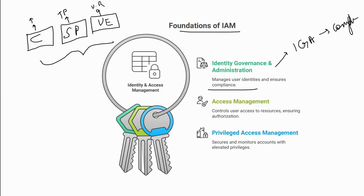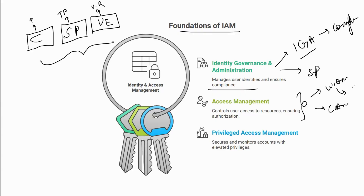Let's tag how these reasons relate to the different domains. IGA manages user identities, ensures compliance, and also contributes to security posture improvement. For Access Management, you have workforce IAM and customer IAM — workforce primarily deals with security posture, and customer IAM deals with user experience and security posture. Organizations typically don't buy an access management tool just to solve a compliance problem; that's where IGA comes in.